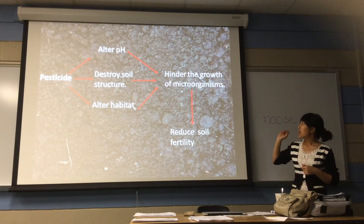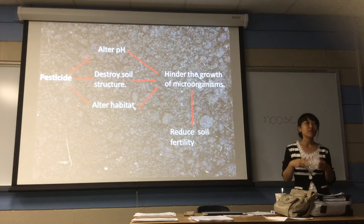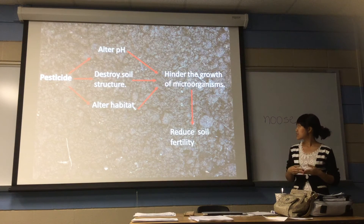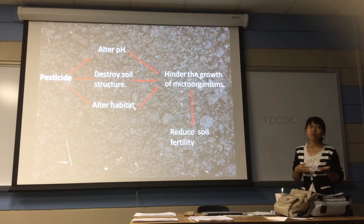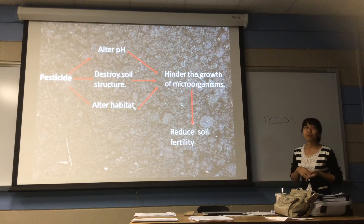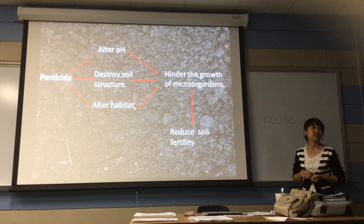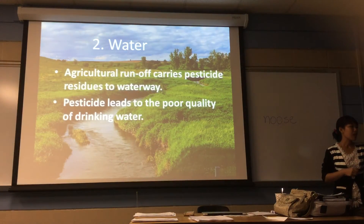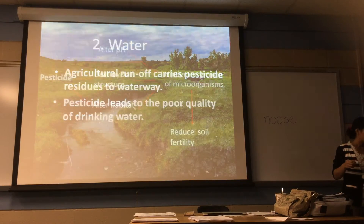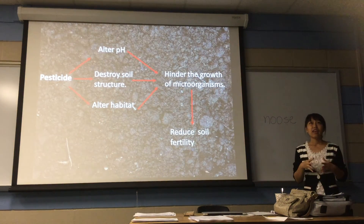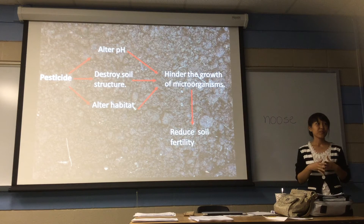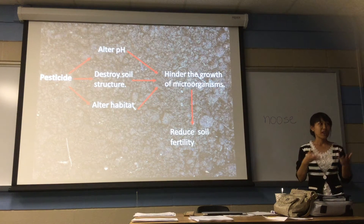So pesticide actually hinders the role of microorganisms. Because, as I said before, microorganisms play an important role in maintaining the fertility of soil. So what happens if a lot of microorganisms die? It means a reduction in the soil fertility. And when the moisture and the structure of soil is altered, it can worsen the farmland erosion. That is how pesticide can have a negative effect on soil.